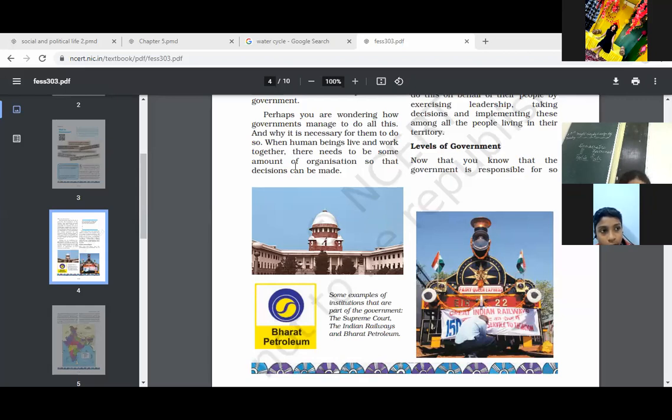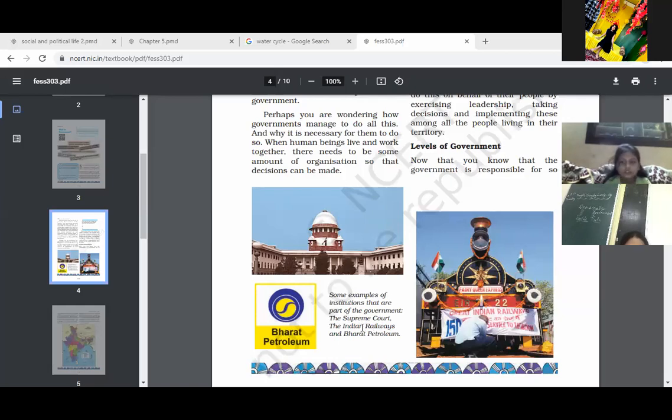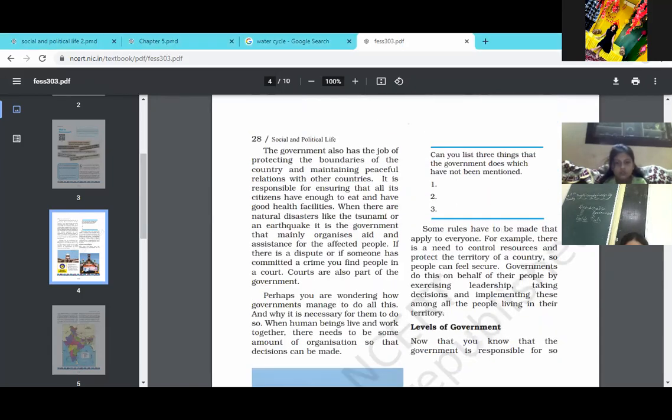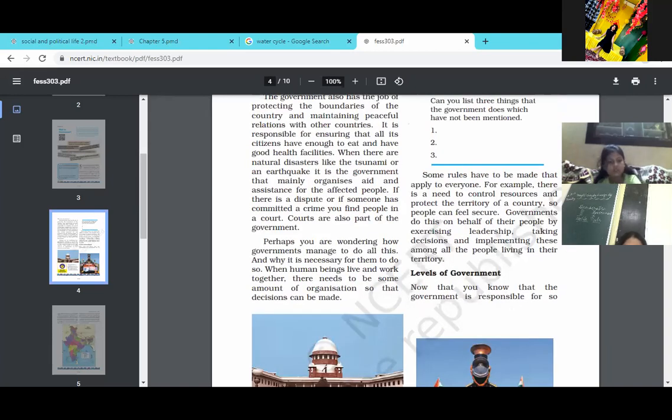The government manages all this money. It requires one organization to do all this work and take decisions for the rules and policies. Some examples of institutions that are part of government like Supreme Court, Indian Railway, and Bharat Petroleum. These institutions work under the government. As a good citizen, it is our responsibility that we should follow all the rules and regulations which are made by the government, because the government made all rules and regulations for our welfare, for our development.